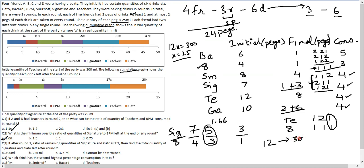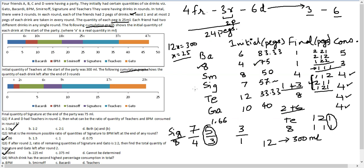12 units corresponds to 300ml, so the answer to the third question is 300ml. For the fourth question — which drink has the second highest percentage consumption in total — the percentages are: Bacardi 5/6 = 83.33%, 8PM 3/4 = 75%, Smirnoff 4/8 = 50%, Signature 4/7 = 57.14%, Teachers 4/12 = 33.33%, and Gate2 4/10 = 40%. The second highest value is 8PM at 75%, so the answer to the fourth question is 8PM. This question requires you to simply record the data appropriately initially, and once done everything else falls into place.